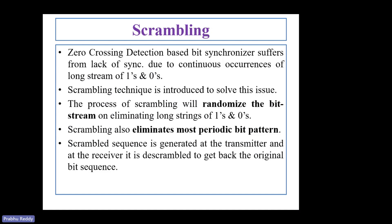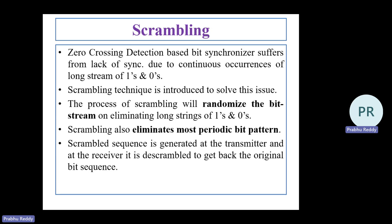To solve the numerical based on scrambling: the zero-crossing detector based bit synchronization suffers from lack of synchronization due to continuous occurrences of zeros and ones. The scrambling technique is introduced to solve this problem. Scrambling randomizes the bits, eliminating continuous occurrences of zeros and ones and periodic bit patterns in the incoming message signal. The scrambled sequence is generated at the transmitter end, and at the receiver the scrambled bits are de-scrambled to get back the original bit sequence.